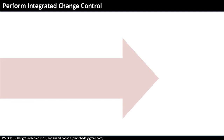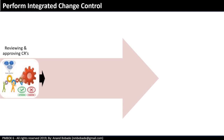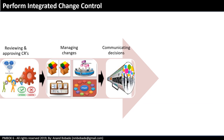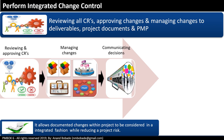Let's look at the definition of the Perform Integrated Change Control process. It is a process of reviewing all change requests, approving changes, and managing changes to deliverables, project documents, and the project management plan, and communicating these decisions to stakeholders. It allows documented changes within the project to be considered in an integrated fashion, while reducing project risk, which often arises from changes made without considering overall project objectives or plan.